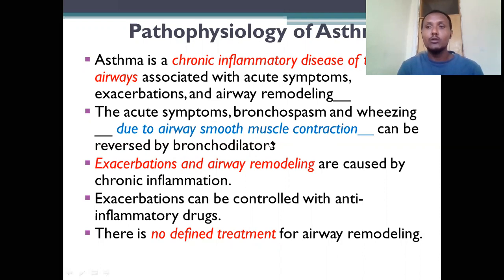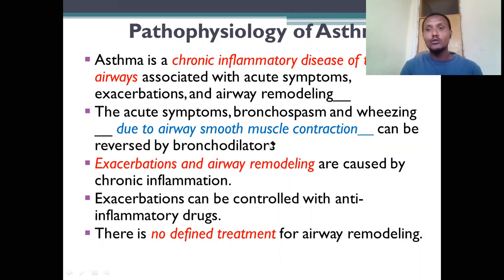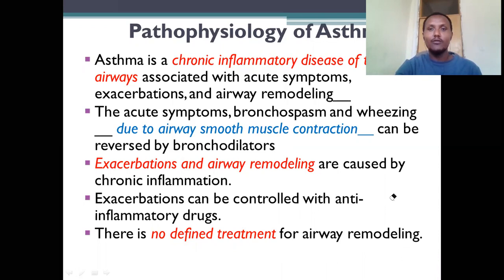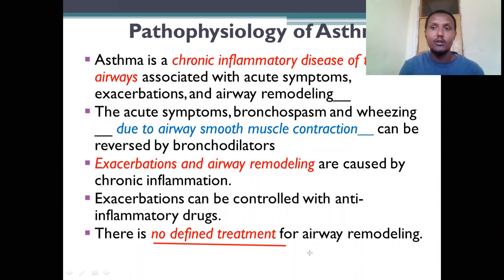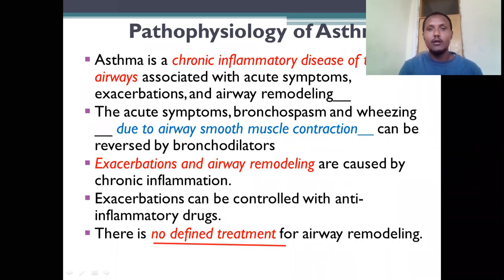Acute symptoms can be controlled by bronchodilators — the most widely used and effective drugs for asthma treatment. Exacerbations can be controlled by anti-inflammatory drugs. Airway remodeling currently has no defined treatment; there is still no pharmacological agent that can reverse or improve airway remodeling, which is why asthma is a chronic disease.